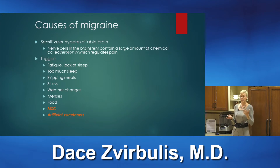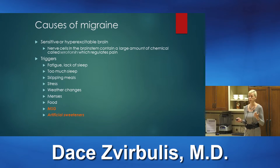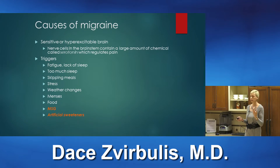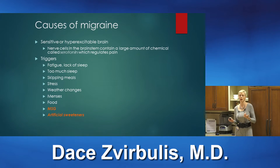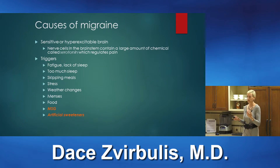Migraine is a disorder of the brain. People with migraines have a very sensitive, hyper-excitable brain to begin with, and there are nerve cells in the brainstem that contain large amounts of serotonin, which is implicated in pain regulation. Multiple triggers can cause migraine headaches, and up to 75% of people with migraines can identify some triggers, although 25% will not have any identifiable triggers.